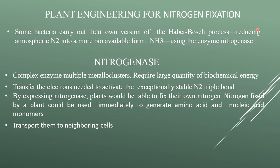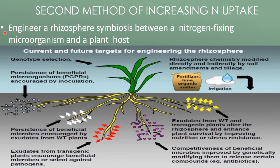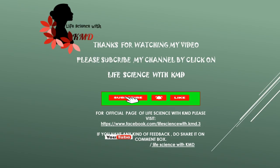Plant engineering for nitrogen fixation: some bacteria carry out their own version of the Haber–Bosch process, reducing atmospheric nitrogen into a more bioavailable form — ammonia — using the enzyme nitrogenase. Nitrogenase is a complex, multiple-metal-cluster enzyme requiring large quantities of biochemical energy for the electron transfer needed to activate the exceptionally stable nitrogen triple bond. By expressing nitrogenase, plants would be able to fix their own nitrogen, immediately generating amino acids and nucleic acid monomers. A second method is engineering a rhizosphere symbiosis between a nitrogen-fixing microorganism and a host plant.